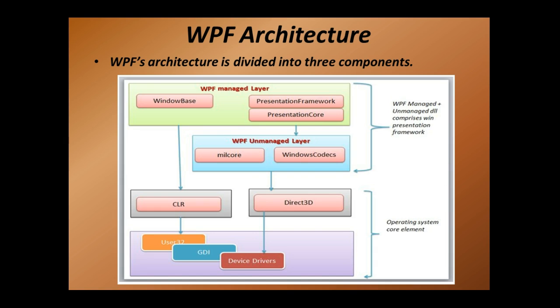This is a diagram you can easily find on Google that explains the architecture of WPF. It has three components: managed layer, unmanaged layer, and the operating system core elements. In the managed layer there is WindowsBase DLL, PresentationFramework DLL, and PresentationCore DLL. These three DLLs or libraries constitute the main part of WPF, and you will see all three in your application references.